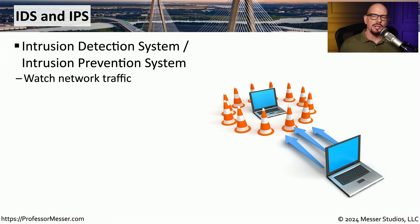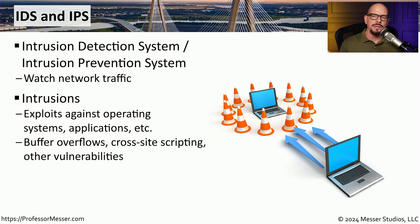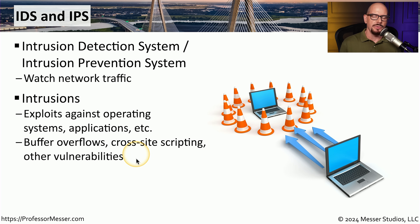Many data centers might also have standalone IDS or IPS devices, although much of that functionality is integrated into the more modern next-generation firewall. IDS refers to an intrusion detection system, and IPS refers to an intrusion prevention system. Both work in similar ways — they're looking for attacks that are inbound to your network and are able to identify, alert, and in many cases prevent that attack from gaining access. These are commonly known attack types, such as exploits against operating systems or applications, taking advantage of known vulnerabilities like buffer overflows or cross-site scripting vulnerabilities.